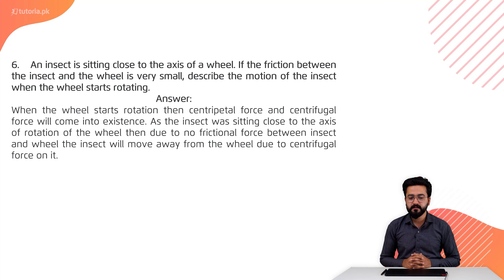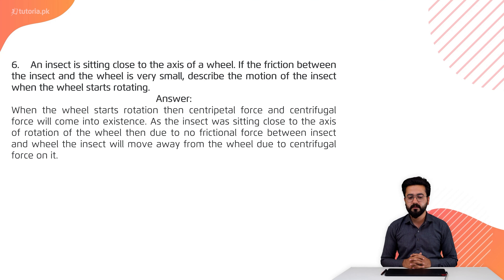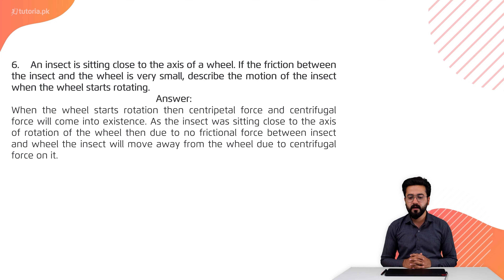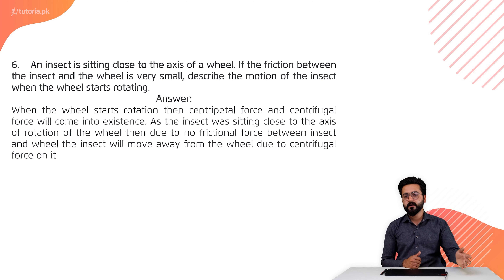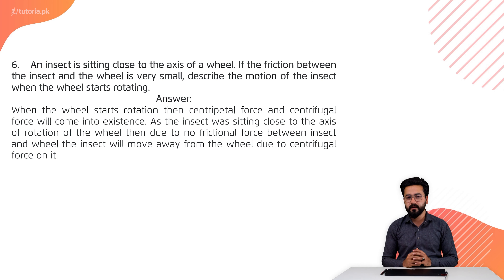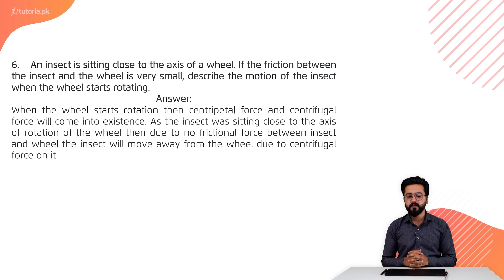Question number six: an insect is sitting close to the axis of a wheel. If the friction between the insect and the wheel is very small, describe the motion of the insect when the wheel starts rotating. Students have to define the motion of the insect which is sitting on the wheel.